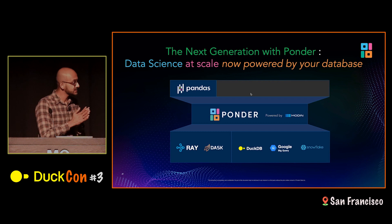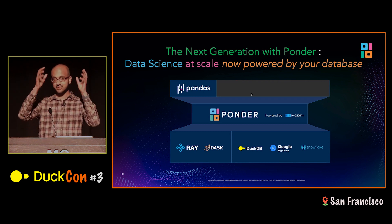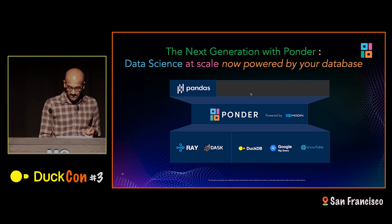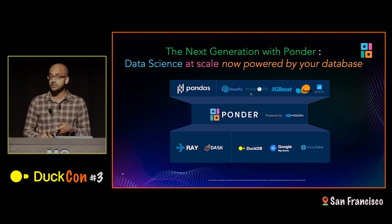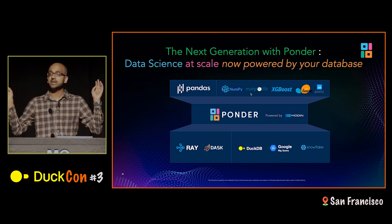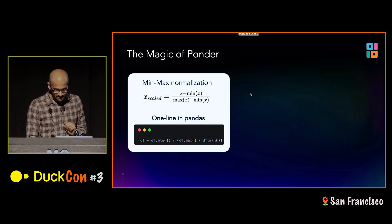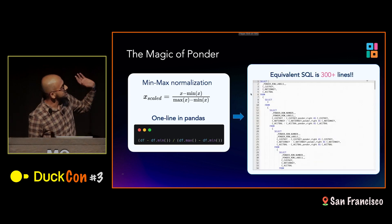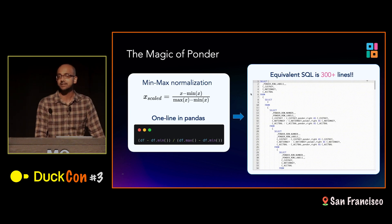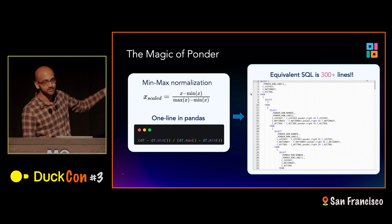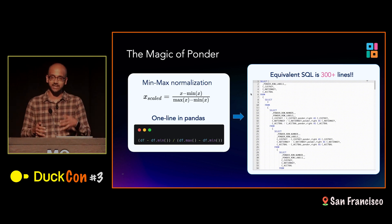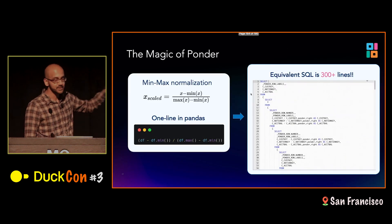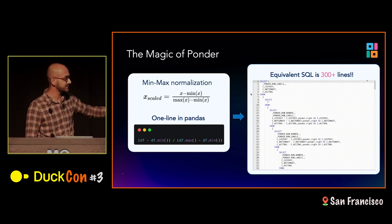With Ponder, we are taking this to the next level — taking pandas and translating it into SQL that can be run on your data warehouse. This could be DuckDB as well as BigQuery or Snowflake. And we're not just doing this for pandas, but also for NumPy, with preliminary support for NumPy and a bunch of other visualization and machine learning libraries. The magic of Ponder is that you write one line in pandas and we can output a 300-plus line equivalent SQL query — for example, min-max normalization in just a few keystrokes. It normalizes each column based on the min and max, and all of this happens automatically. The user doesn't have to do a thing.